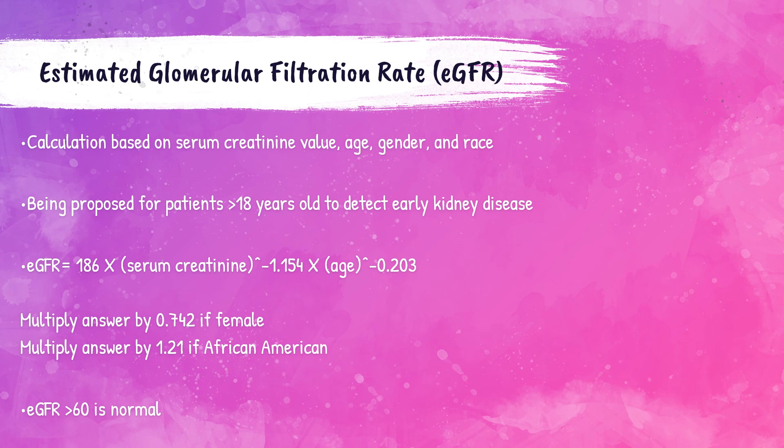Another calculation for assessing the kidney is the estimated glomerular filtration rate, or eGFR. This calculation uses the patient's creatinine value, age, gender, and race, and is only used for patients older than 18 years of age. As MLTs and MLSs, you do not need to know the formula itself, just what the eGFR is and that the normal reference range is greater than 60.